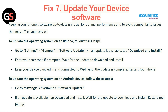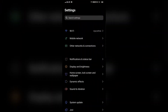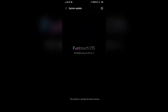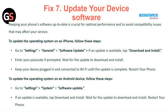To update the operating system on an Android device, go to Settings, then select System, then Software Update. If an update is available, tap Download and Install. Wait for the update to download and install, then restart your phone.